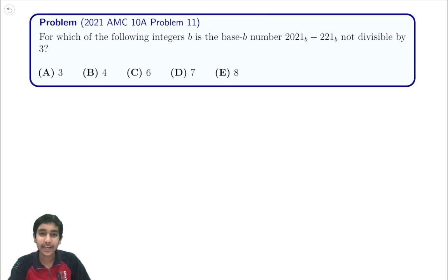Hi everyone! In this video, I'll show you the solution to the 2021 AMC 10A problem 11. For which of the following integers b is the base-b number 2021 base b minus 221 base b not divisible by 3?